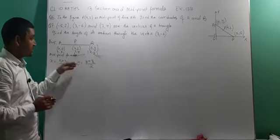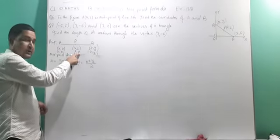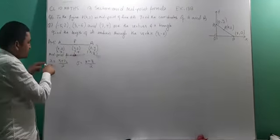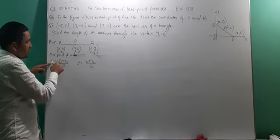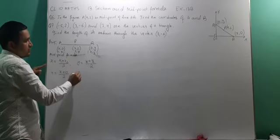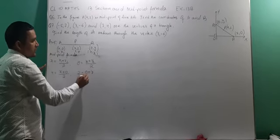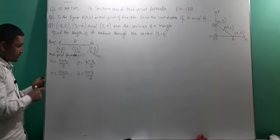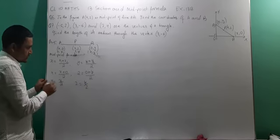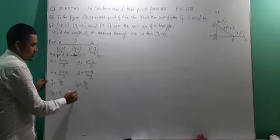This midpoint formula helps us get the value of the middle point, that is the value of x and y. Remember, x and y indicate the coordinate of the middle point, that is P. Now, the value of x1 is x itself, the value of x2 is 0, divided by 2. Similarly substituting for y: y1 is 0, y2 is y itself, divided by 2.